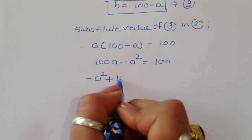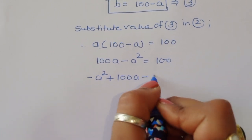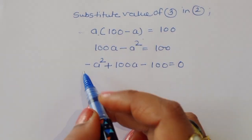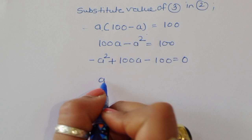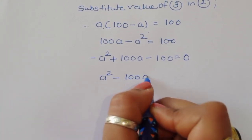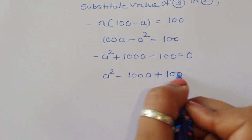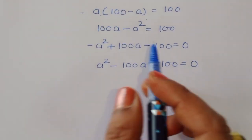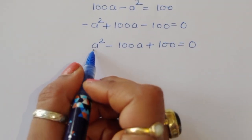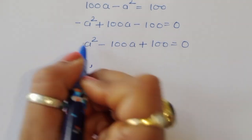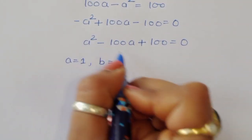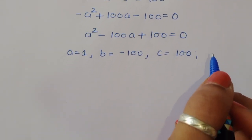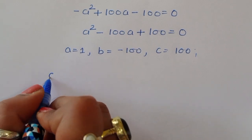We can write this as minus a squared plus 100a minus 100 is equal to 0. Multiplying through by minus 1, we get a squared minus 100a plus 100 is equal to 0. In this equation, the coefficient of a squared is A = 1, B = minus 100, and C = 100.